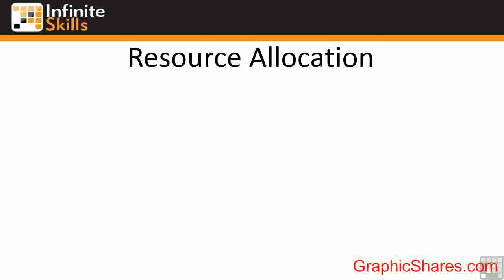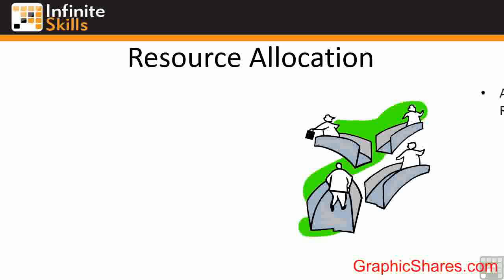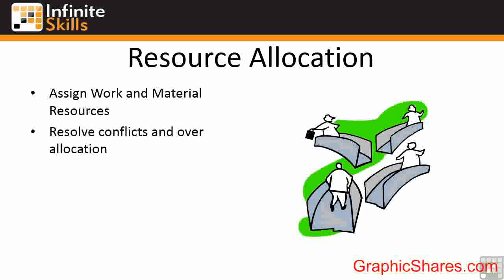Once you have your resources entered into the system, you need to allocate them to your tasks, and that's where Microsoft Project will do a lot of the calculations for you. When you assign work and material resources, conflicts may arise. There are no conflicts with material resources, as they are assumed to be infinite. But work resources could conflict if you're trying to use the same person at the same time. Those conflicts and any over-allocations would need to be resolved — Microsoft Project can help with that. Once all conflicts are resolved, you can produce the final costings for the project.